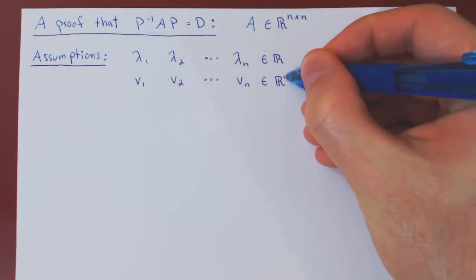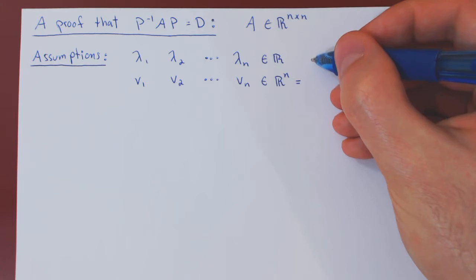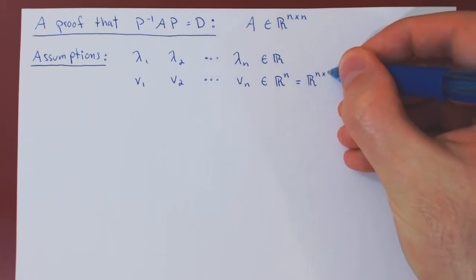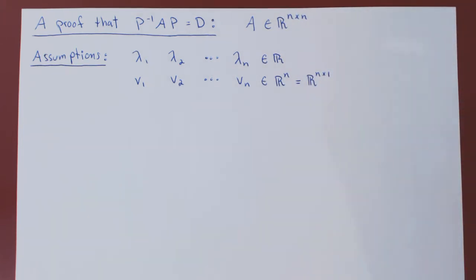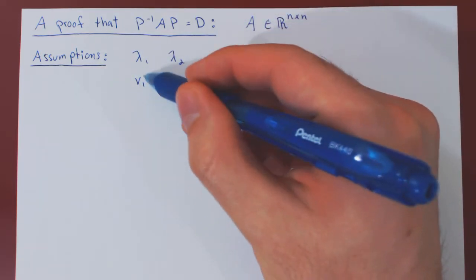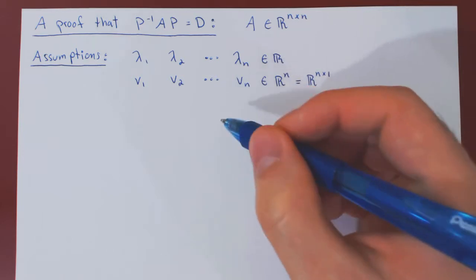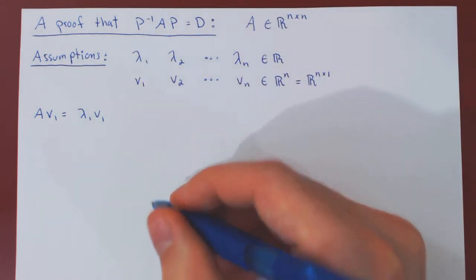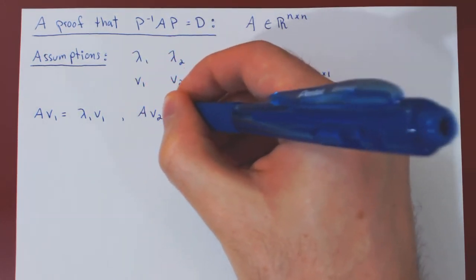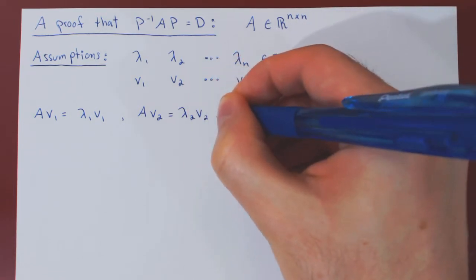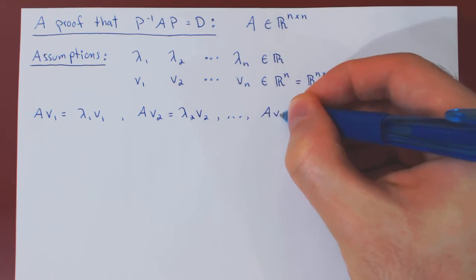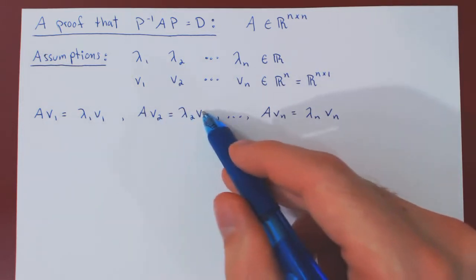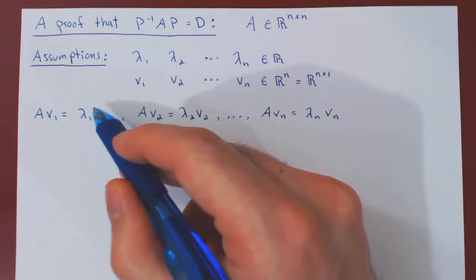The eigenvectors are vectors in Rⁿ, so they are columns with n entries — belonging in Rⁿ, which you can also write as Rⁿ by 1, meaning n rows and one column. The key assumption is that each vector is the eigenvector of the corresponding eigenvalue: A times v1 equals lambda 1 v1, A times v2 equals lambda 2 v2, up to A times vn equals lambda n vn. This is simply the definition of an eigenvector-eigenvalue pair.